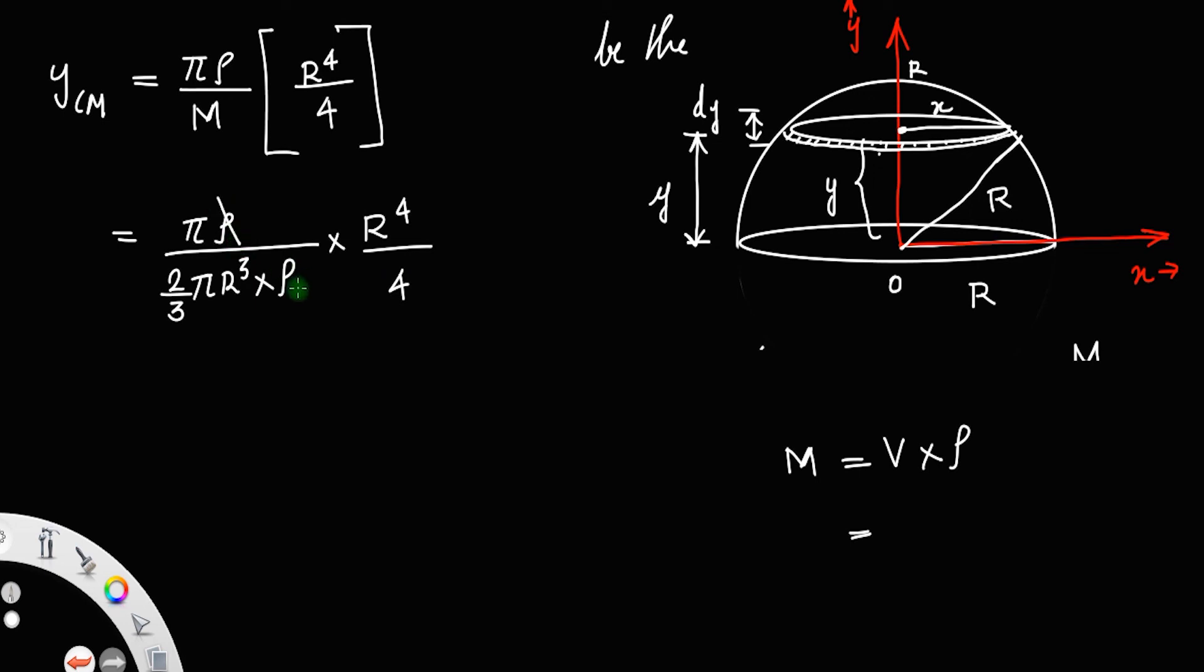Cancel rho and pi. This is equal to 3 r raised to 4 divided by 8 r cubed. Cancel r cubed and r raised to 4, the final answer will be 3r divided by 8.